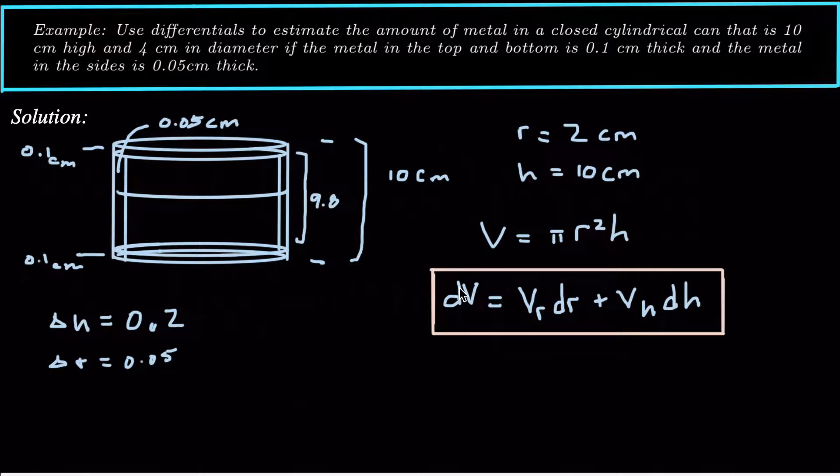Now, the differential definition is, in this case, the function is V, which is a function of r and h. As we change the radius, we get a different volume. As we change the height, we get a different volume. So the volume is a function of r and h. It's a multivariable function.